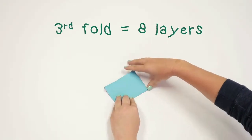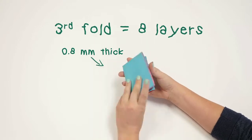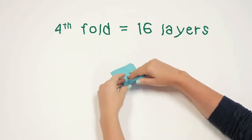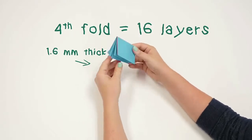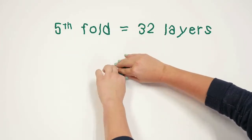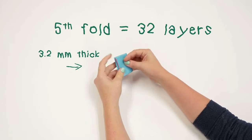The third fold: eight layers with a thickness of 0.8 mm. The fourth fold: 16 layers with a thickness of 1.6 mm. The fifth fold: 32 layers with a thickness of 3.2 mm.